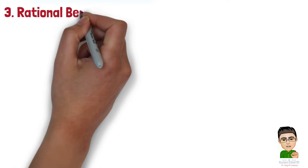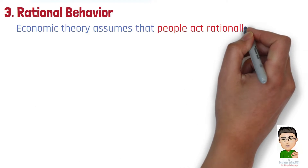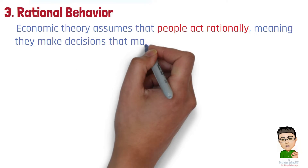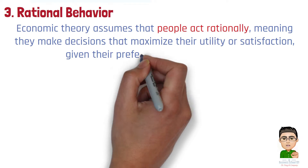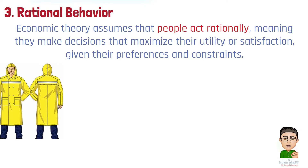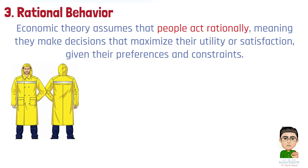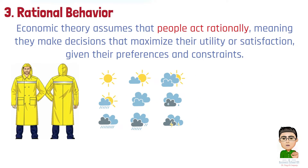Number 3: Rational Behavior. Economic theory assumes that people act rationally, meaning they make decisions that maximize their utility or satisfaction given their preferences and constraints. This doesn't mean people are always right or logical, but they generally try to make the best choices based on the information they have. Example 1: Consumers may buy raincoats when the weather forecast predicts a high chance of rain, anticipating the need for protection and acting to avoid discomfort.